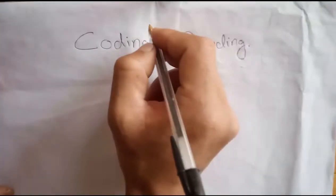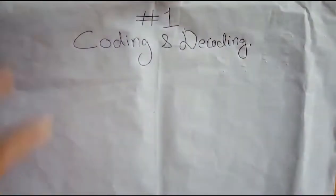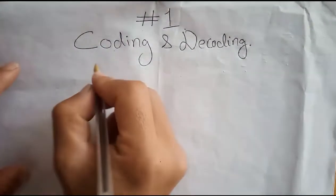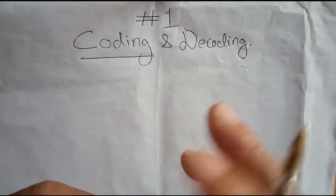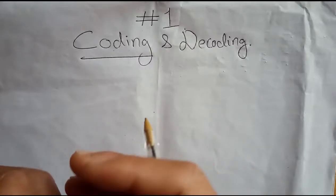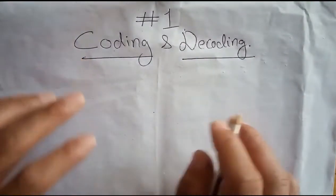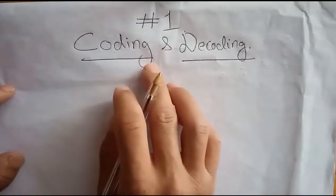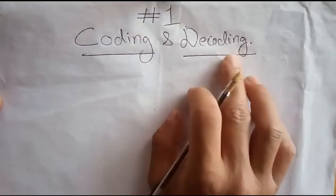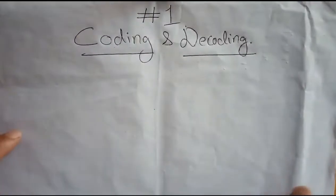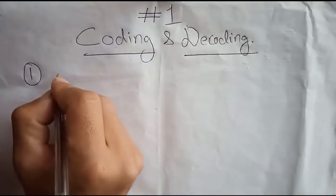We will start with the first PE lesson, Preliminary Examination Lesson 1. We will begin with coding and decoding. Coding simply means changing the message into some signals — let's say numbers, alphabets, or shapes. We call it coding. When we change the coded message back into its original format, we call it decoding. There are lots of types. We will start with the simple ones and then go to the tougher ones.